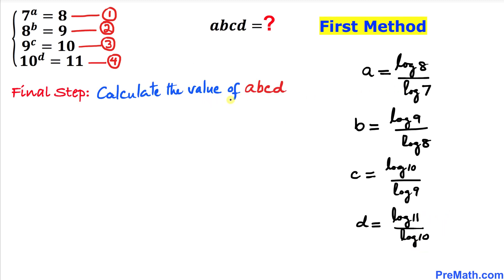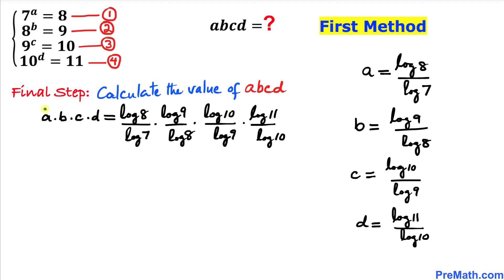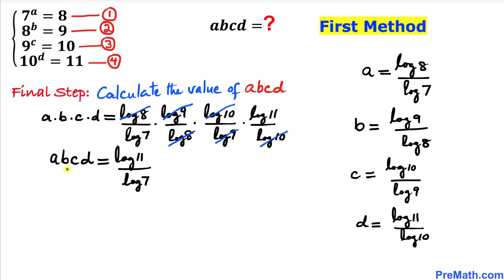Here's our final step. Let's calculate the value of a times b times c times d. Substituting the values of a, b, c, and d and multiplying them together on the right-hand side, we can see that log of eight cancels with log of eight, log of nine cancels with log of nine, and log of ten cancels with log of ten. Our equation becomes: a times b times c times d equals log of eleven divided by log of seven.